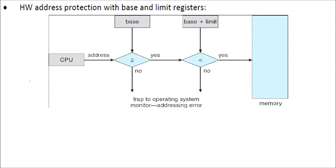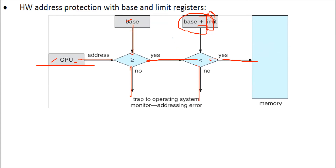The CPU generates an address and the base is added. If the CPU address is greater than or equal to the base plus the CPU address, we proceed; otherwise, we trap an error. Then we also check the limit — if the resulting value is less than what is coming, we go to error; otherwise, we address it to memory.